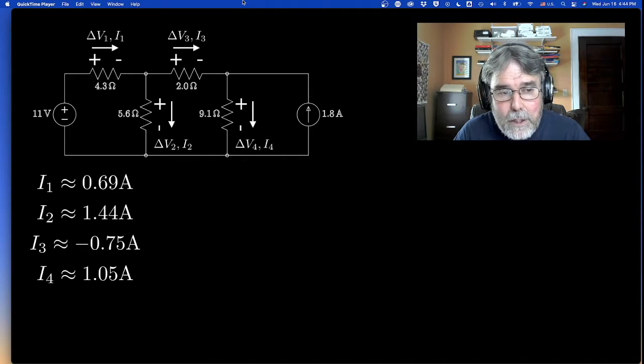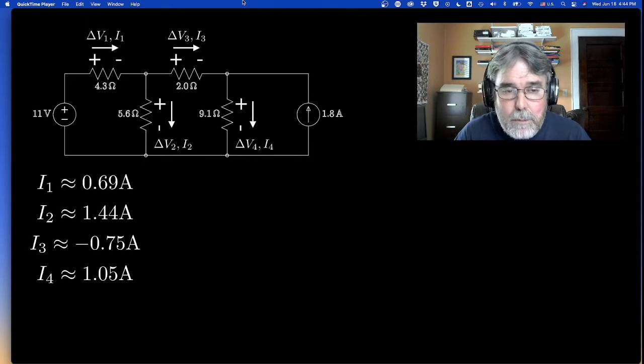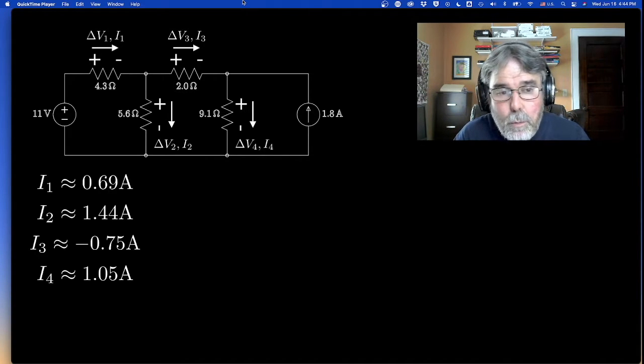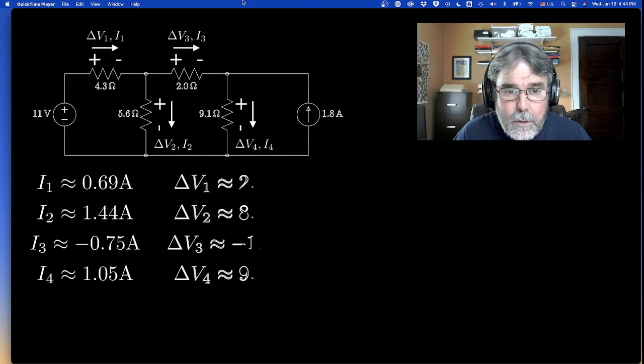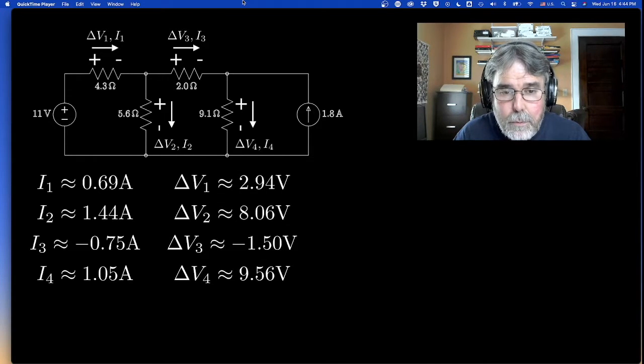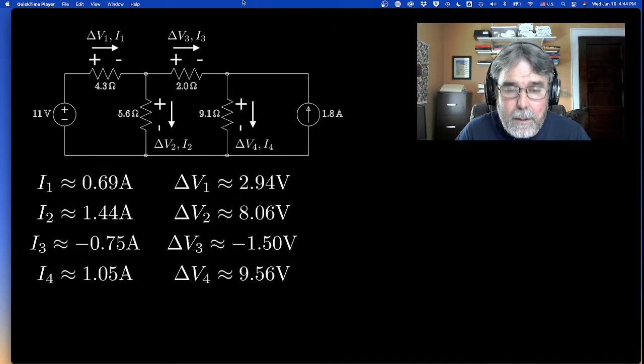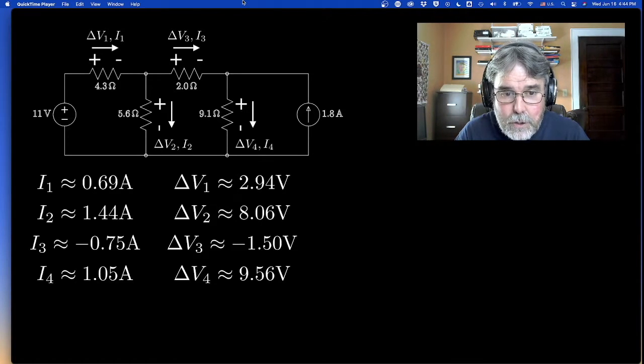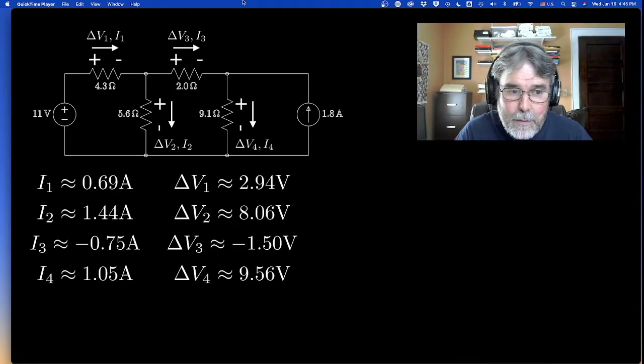If you multiply each of these currents by the corresponding resistance, in other words you just apply Ohm's law, then you get that the voltage drop through each of these guys is easy to calculate. Notice that the voltage drop for the third resistor, the 2 ohm resistor, is negative. The current is negative.